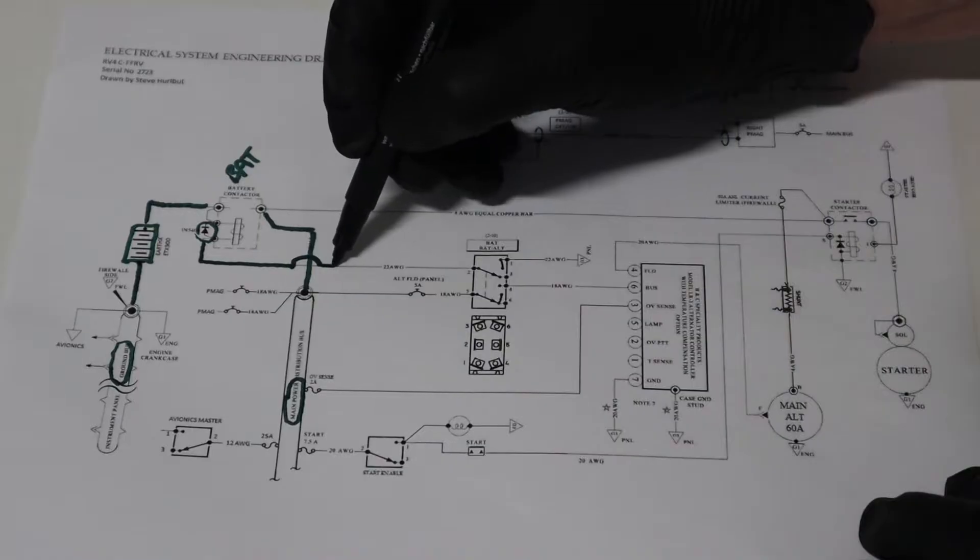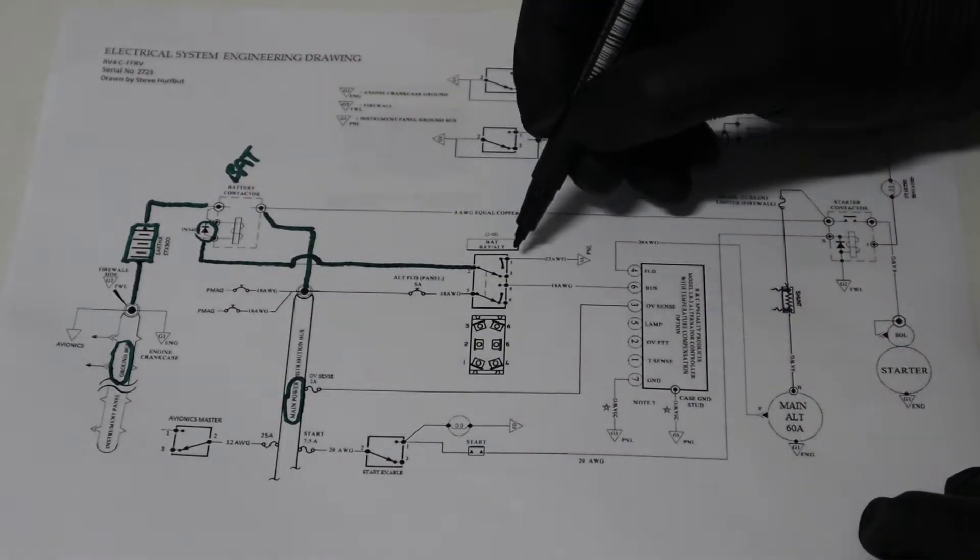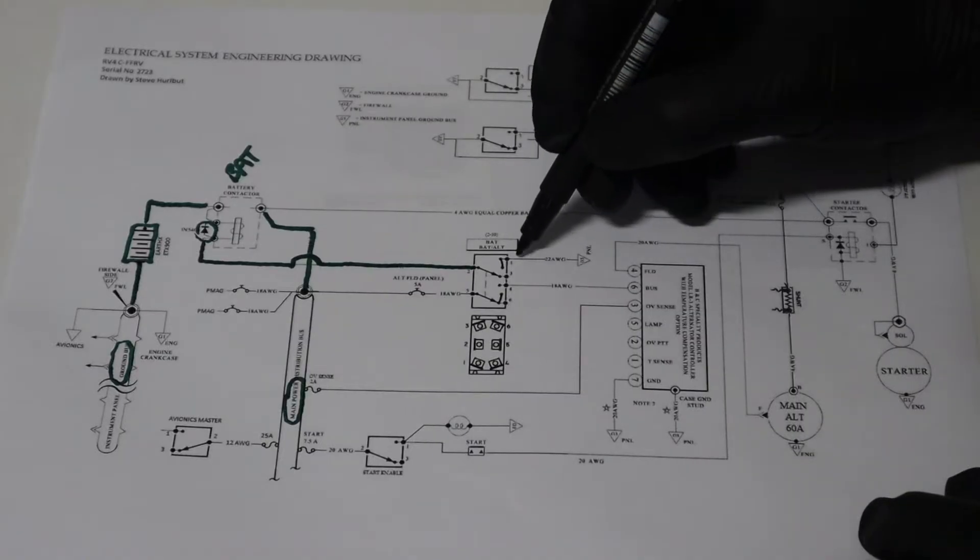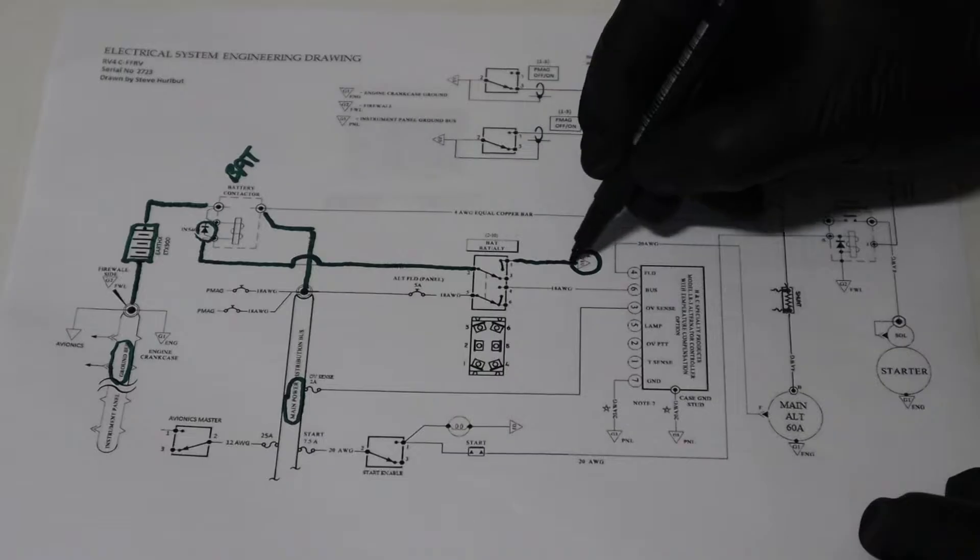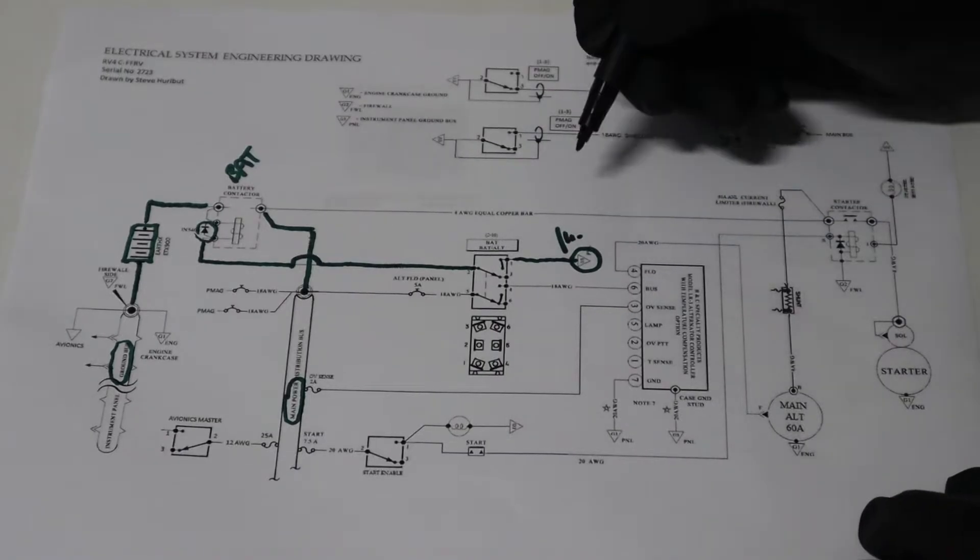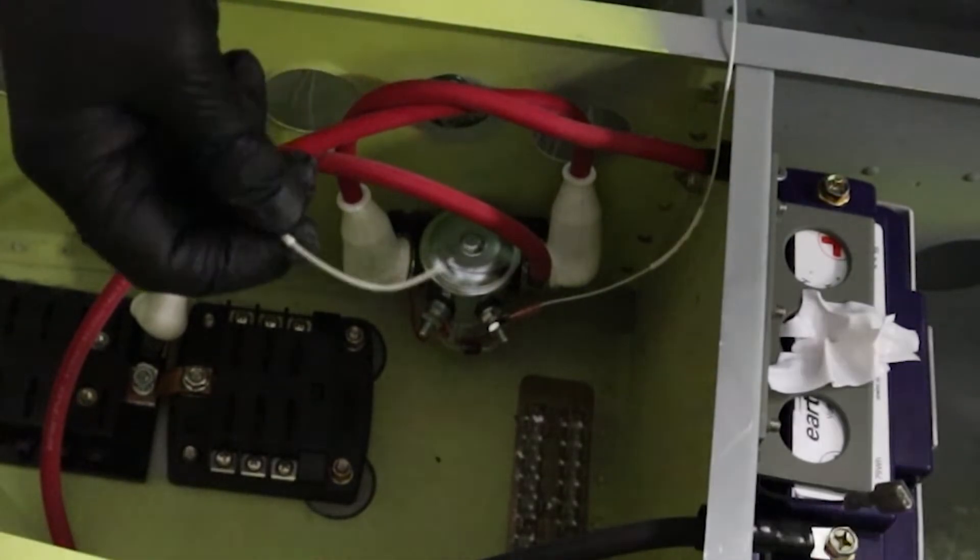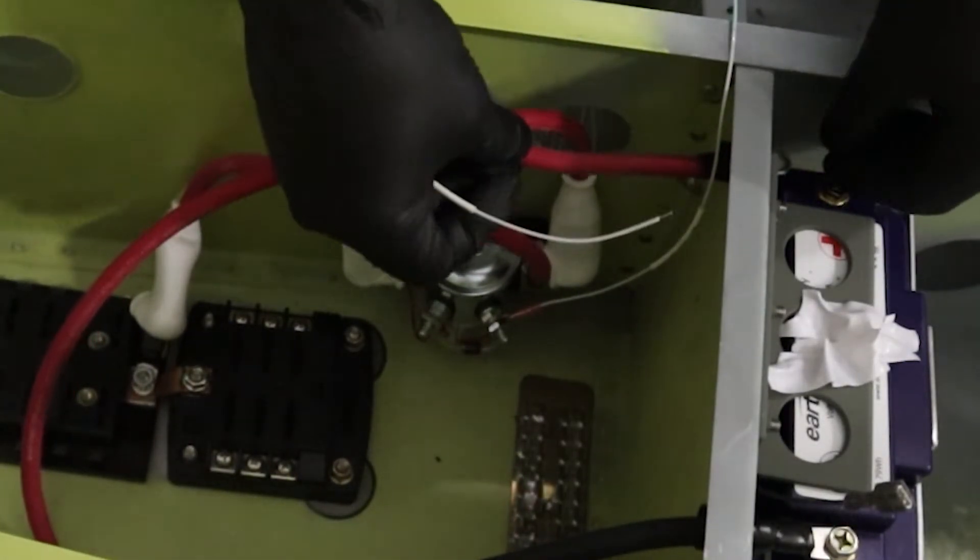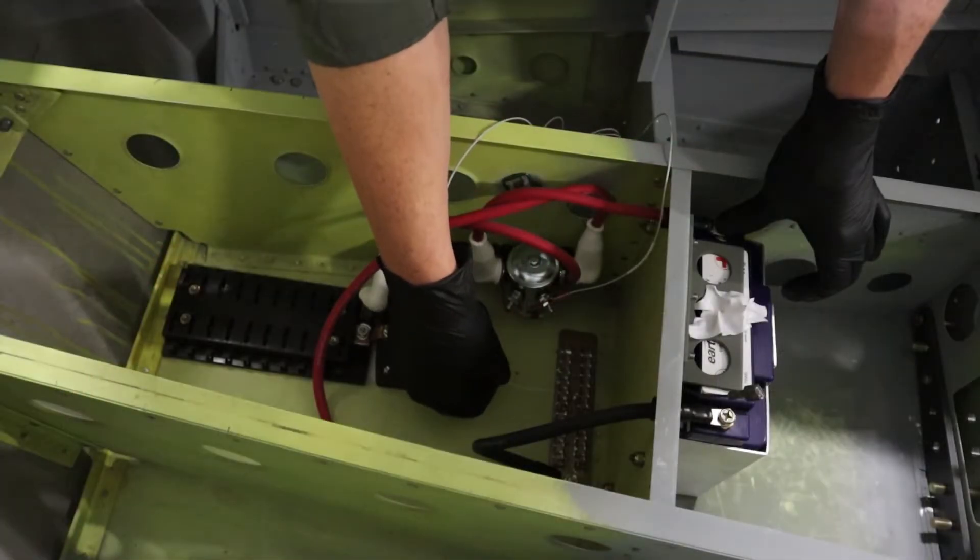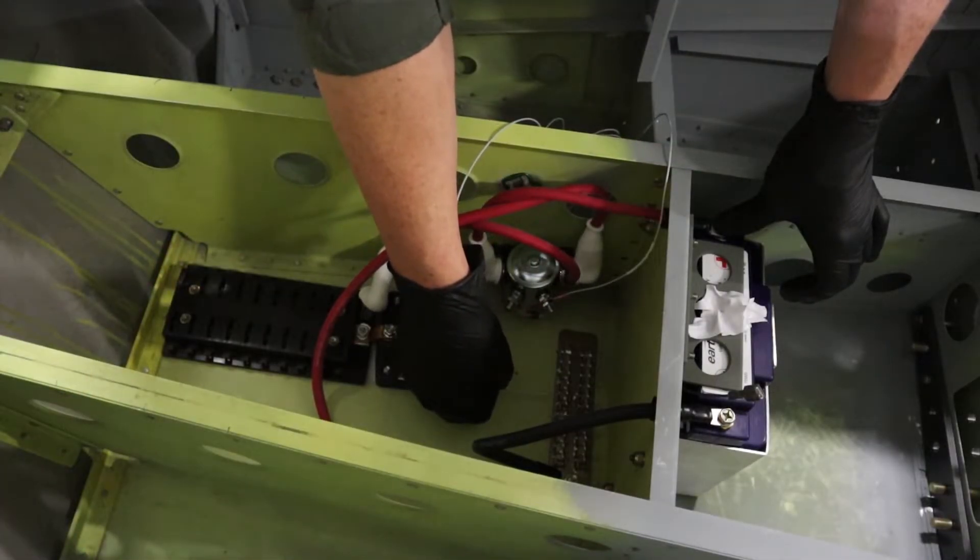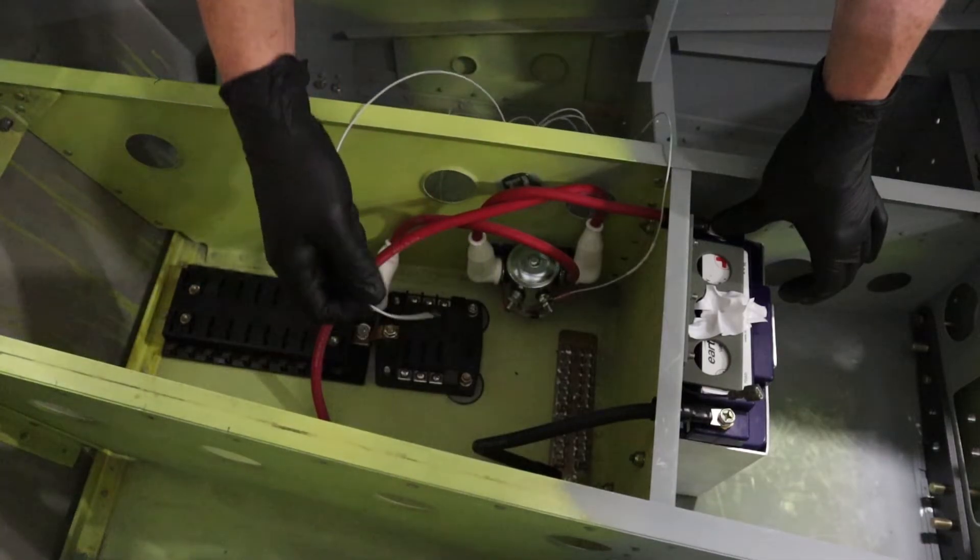Now from the master relay, we're going to have a 22 gauge wire going to our master switch. That switch is going to ground out that wire, and that's how we turn on the battery to the aircraft. So just to test it out, we'll hook up the positive terminal of the battery very carefully, making sure you don't short out any wires and nothing's hitting the ground. And then you'll hear that click, which is the master relay connecting.